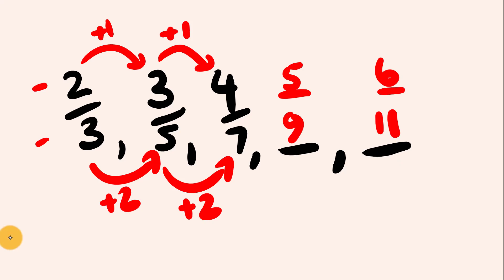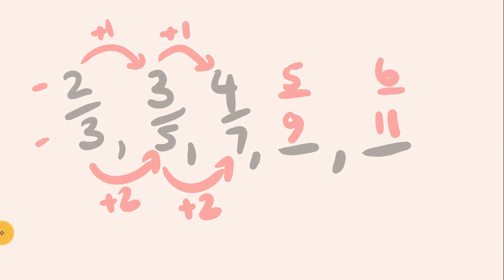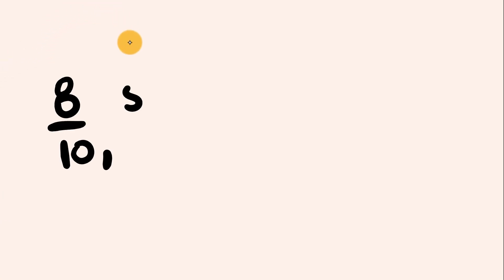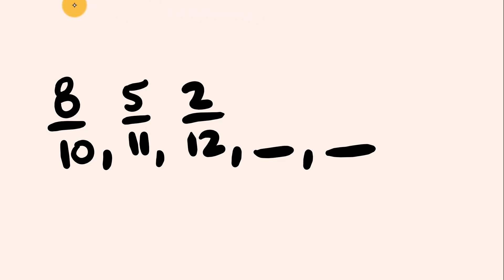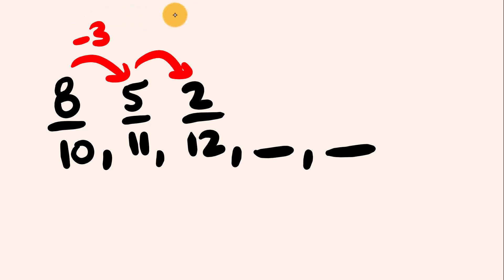Watch out for those — they're a bit of a trick sometimes. What about one last one? We start with 8/10, then 5/11, then 2/12. What are the next two values? Pause the video and give it a go. We'll separate the top and bottom values. From 8 to 5 on the top, we subtract 3, and from 5 to 2 we also subtract 3.